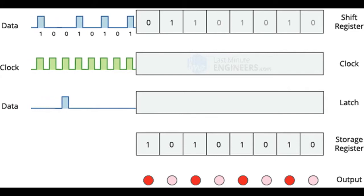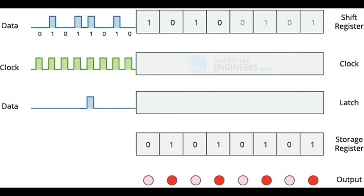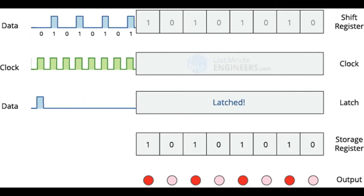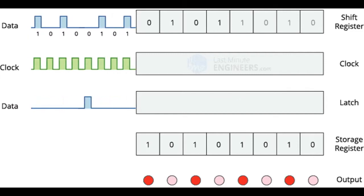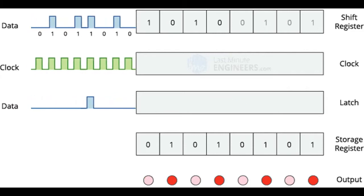You send your bits using the data signal, one bit for each pulse of the clock, and the bits are stored in our first component called the shift register. Each new bit essentially pushes or shifts the previous bit down the line.